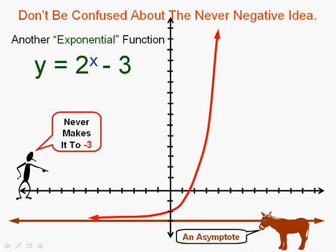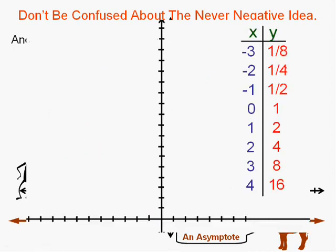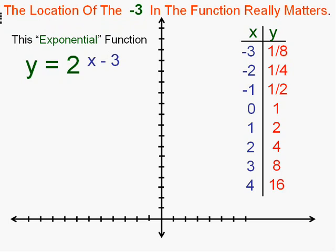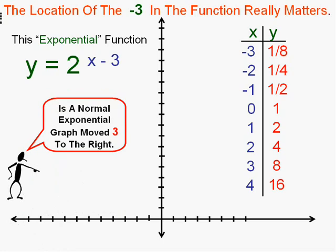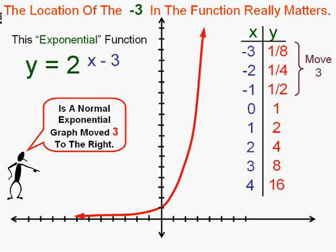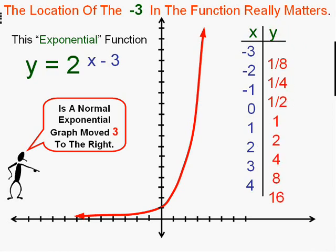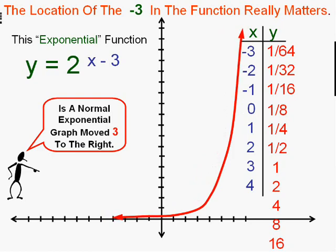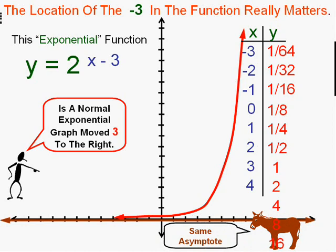Interestingly enough, what if we change the location of the negative 3 or minus 3? Let's try putting it in the exponent itself. Well, you know what will happen then? We'll get the same numbers except it's going to actually be moved to the right. So I take y equals 2 to the x and I'm going to move these values down 3 actually and put in some much smaller values actually and the graph will still move over but it'll still have an asymptote, okay?